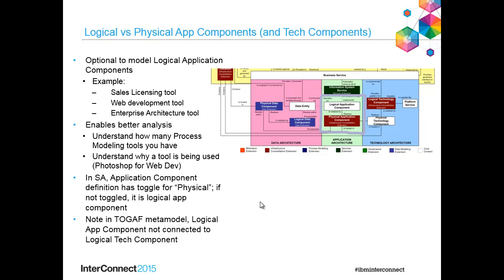In System Architect, the application component definition has a toggle choice for logical or physical. So there's one application component definition, and you specify whether it's logical or physical through a Boolean choice, really.